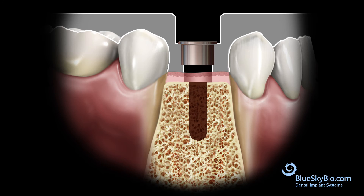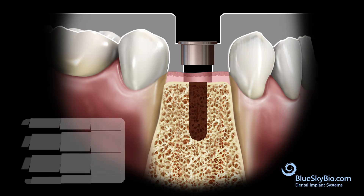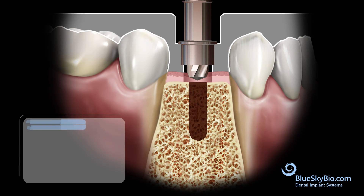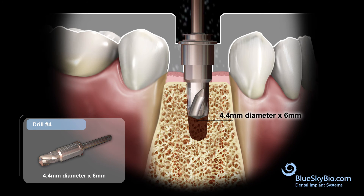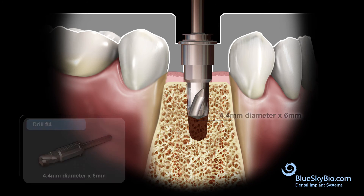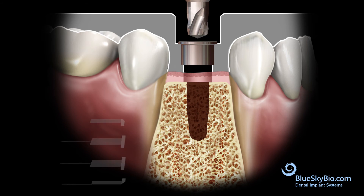The self-tapping and tapered design of the Bio Max implant will compress soft bone and obtain proper primary stability. If the bone is of normal or high density, the final drill diameter is used to complete the osteotomy — in this case a 4.4 millimeter wide drill. Use the 6 millimeter long drill first, activating within the master tube after it slightly engages and drilling with irrigation until stopped.